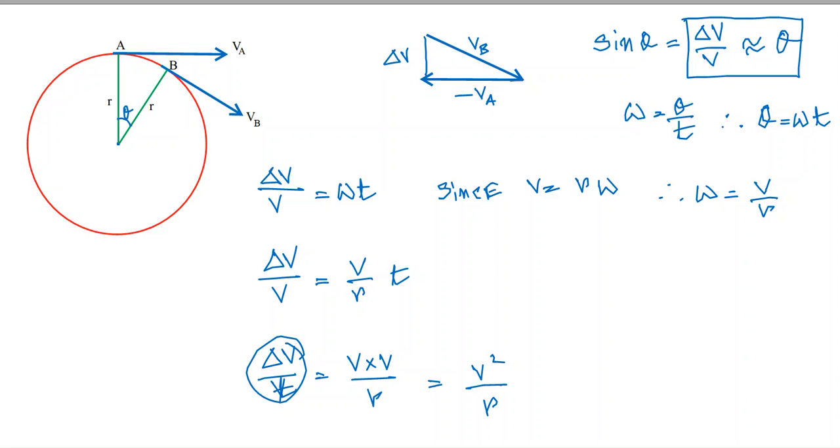Delta V by t is the rate of change of velocity, and what is this rate of change of velocity? It's basically acceleration. So now you have the equation for centripetal acceleration using the small angle approximation method. Hope this helps.